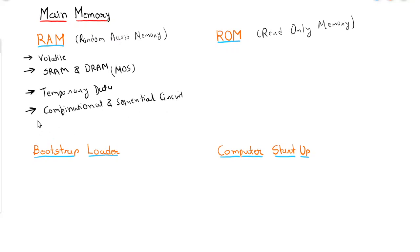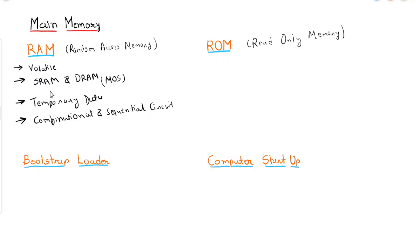Sequential circuits are used to store the information, and combinational circuits are used in the operation of the elements. Static RAM is mostly used to implement cache memory, while Dynamic RAM is used to implement primary memory.